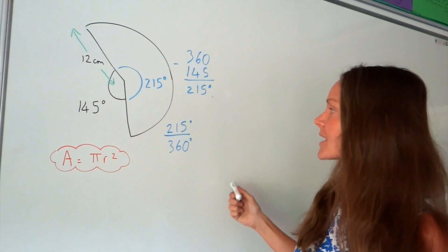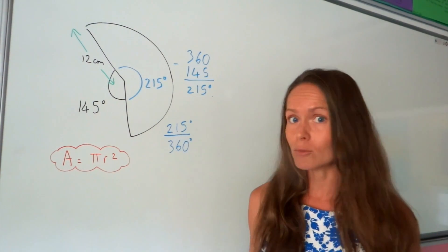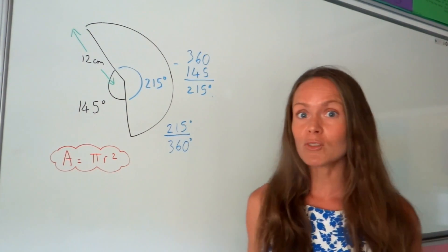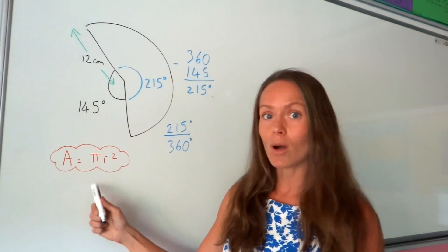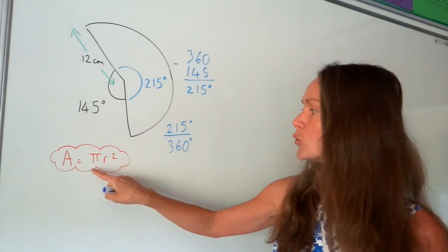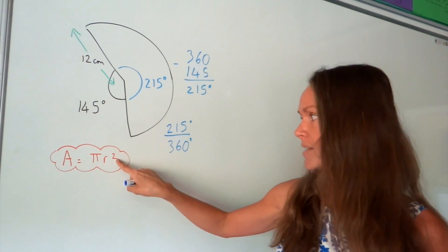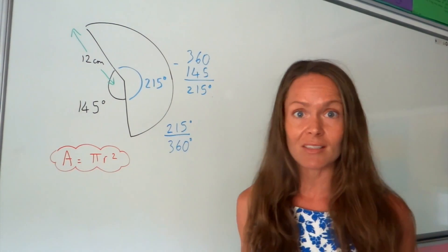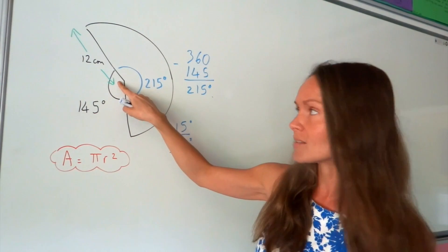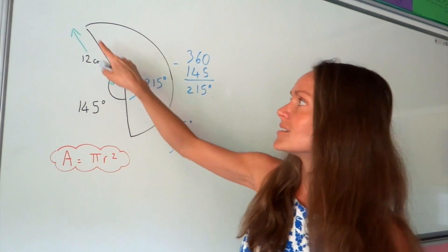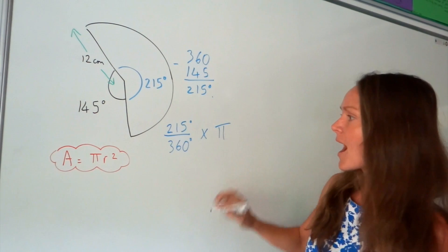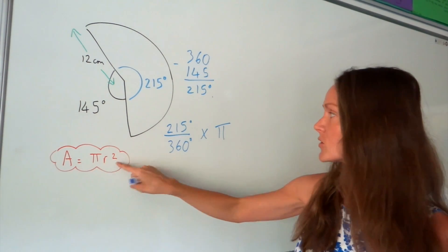So 215 over 360 is our sector as a fraction of one full circle. Now all we need to do is multiply that fraction by the area of one full circle. To work out the area of a circle you do pi multiplied by the radius squared. The radius is the distance from the centre of the circle to the circumference — it's given in the question as 12 — so I'm going to multiply by pi and then by 12 squared.